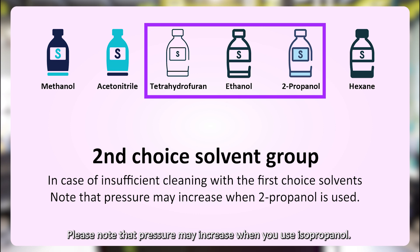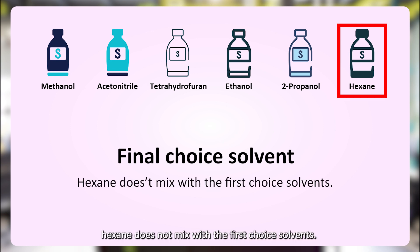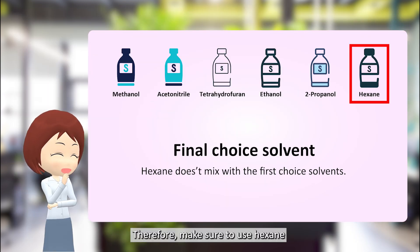Please note that pressure may increase when you use isopropanol. If the cleaning with the second choice solvents is still insufficient, use hexane as the final choice. However, hexane does not mix with the first choice solvents. Therefore, make sure to use hexane after applying any of the second choice solvents.